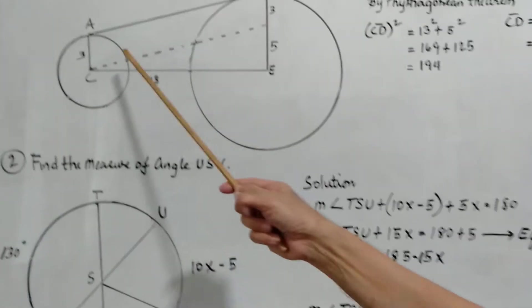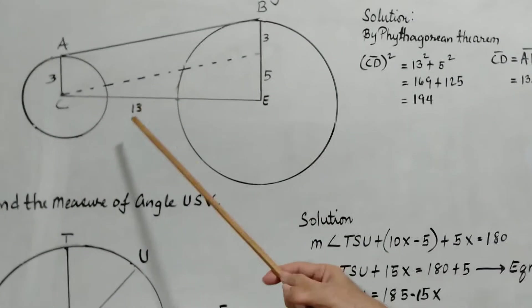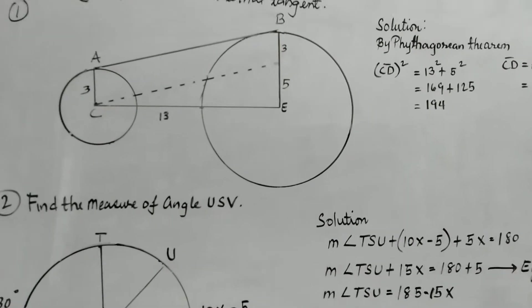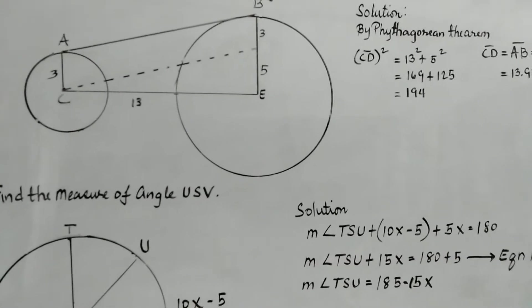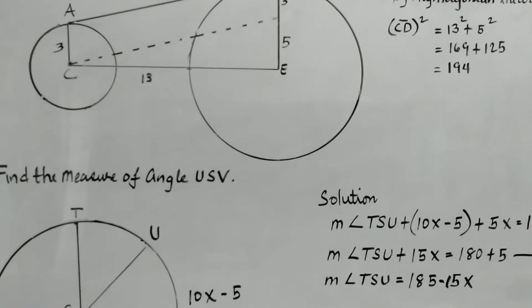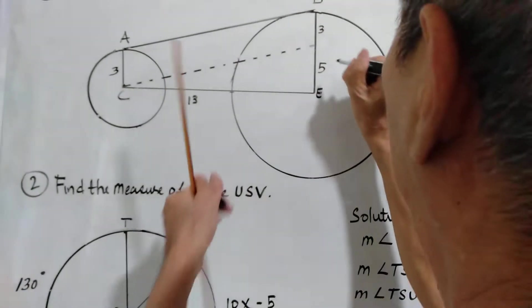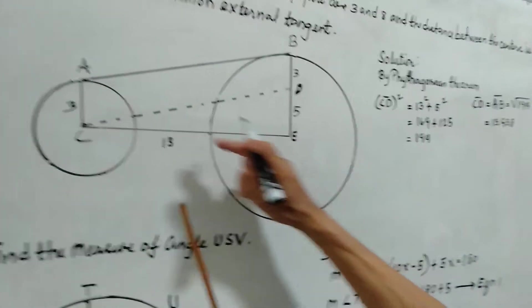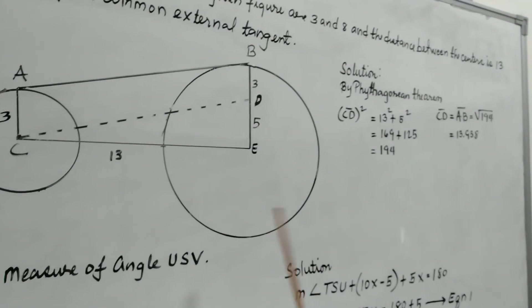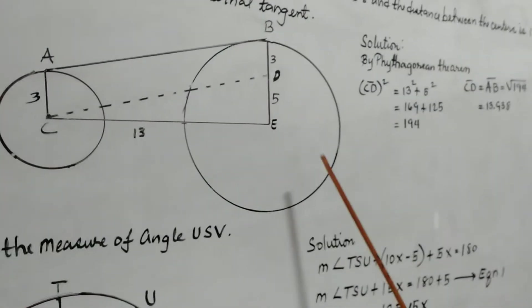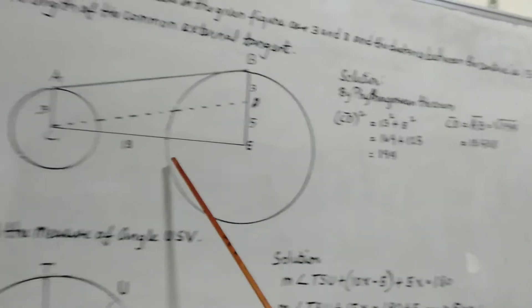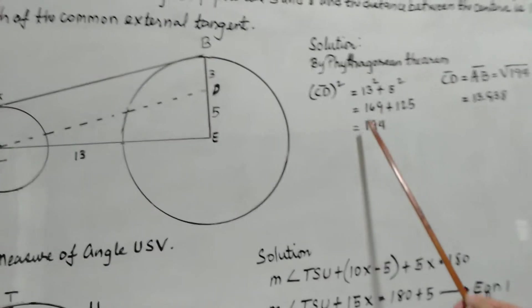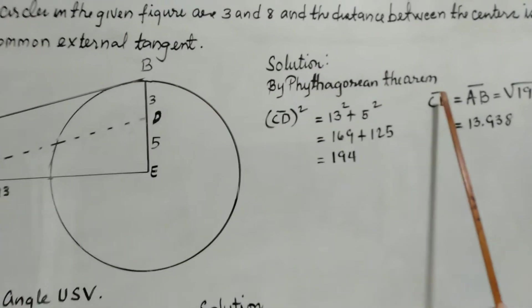So to find AB, we need to find CD. So this is CD, we label this as CD. You see here, it is parallel and equal to AB. So to get CD, we are actually getting AB. So to get CD, we are going to use the Pythagorean theorem.